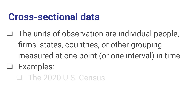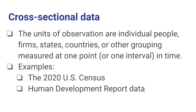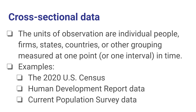Examples of that would include any one of the U.S. censuses, such as the 2020 U.S. census, where all the questions refer to a specific point in time. The Human Development Report is produced by the United Nations and contains data on the status of a variety of human development indicators in different countries. Any one year's data from that would represent a cross-section of data on the state of human development in these countries. The Current Population Survey is a monthly survey conducted by the U.S. Bureau of the Census, and it provides data on a random sample of individuals at that specific month.